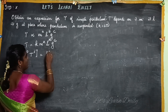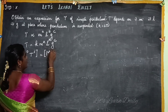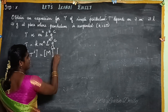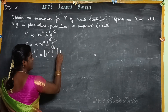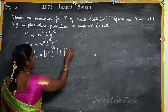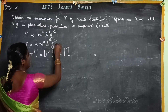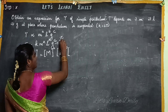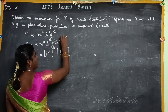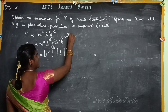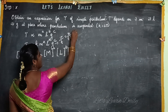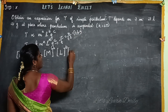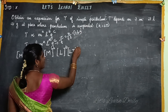Mass is capital M, whole power a. Length is capital L, whole power b. Next, G is acceleration due to gravity. Acceleration is velocity divided by time, and velocity is distance divided by time, so G = L/T² — that is, the dimension of G is LT⁻².